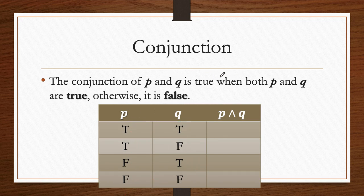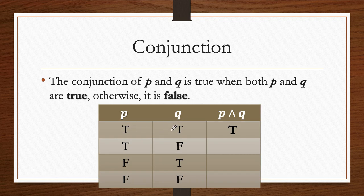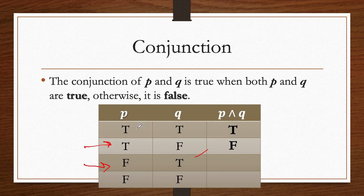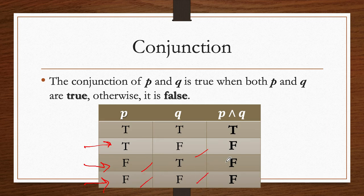A conjunction P and Q is true when both are true. First row: both true, so the answer is true. Second row: Q is false, so the conjunction is false. Third row: P is false, so the conjunction is false. Last row: both are false, so clearly the answer is false. That's how we evaluate conjunctions.